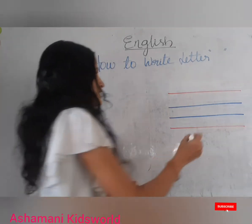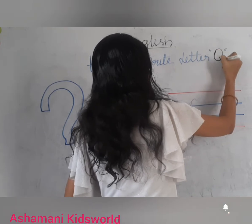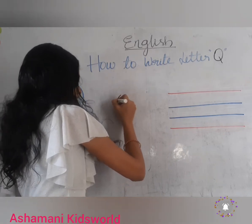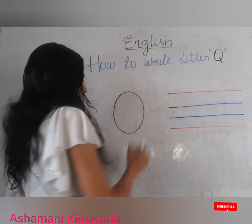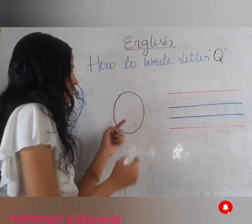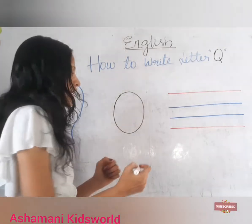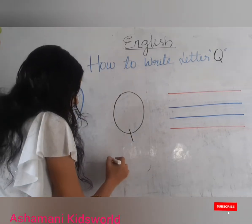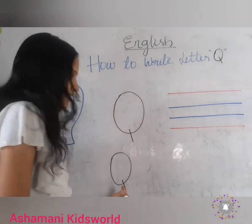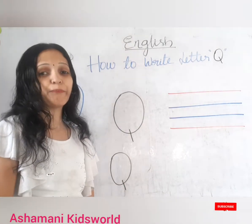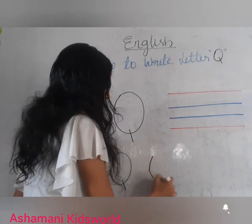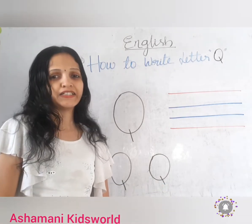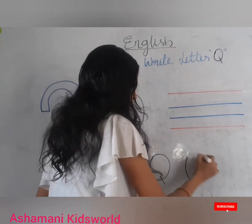To write capital letter Q, you need to write a circle. After writing a circle, you have to write a small slanting line. Circle and a small slanting line makes the letter capital Q.